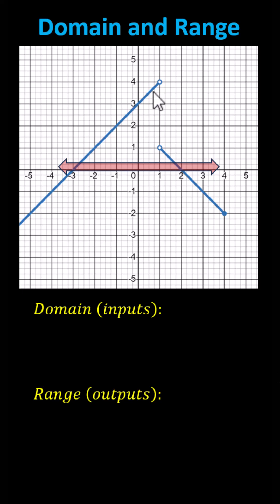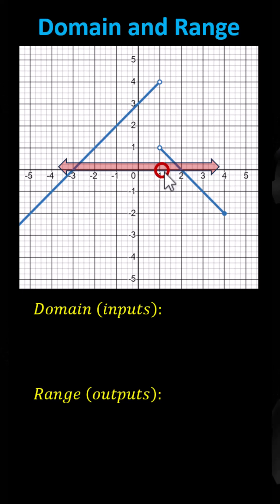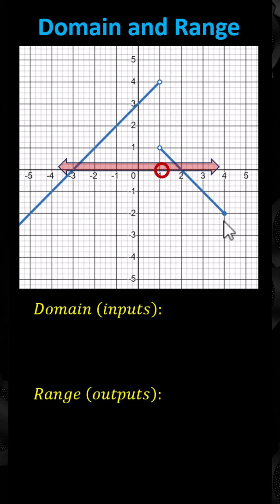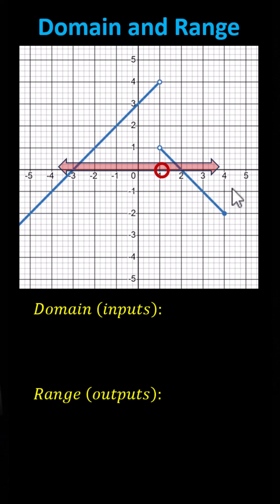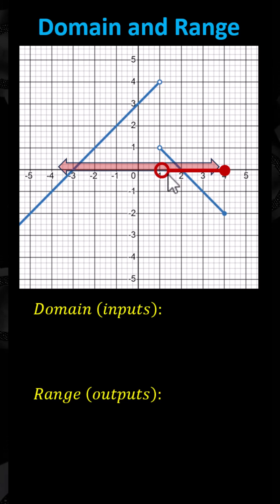Notice there's a hole or break in the graph at x equals 1, so 1 is not in the domain. Moving to the right, the rightmost point is a closed point where x equals 4. Because of the closed point, 4 is in the interval. The domain contains all values from 1 to 4, not including 1 but including 4.